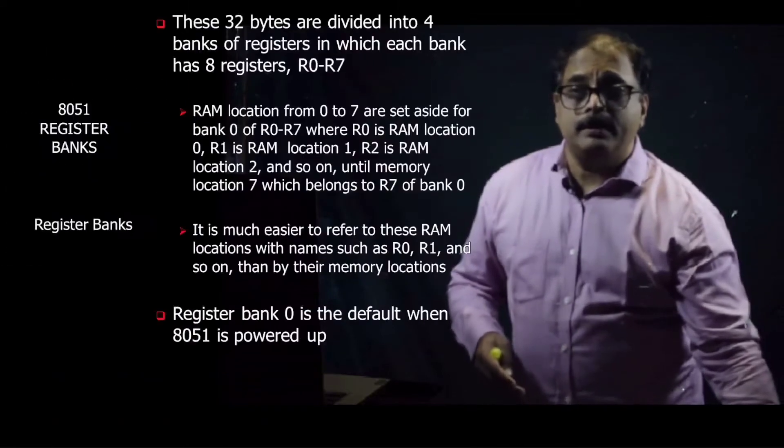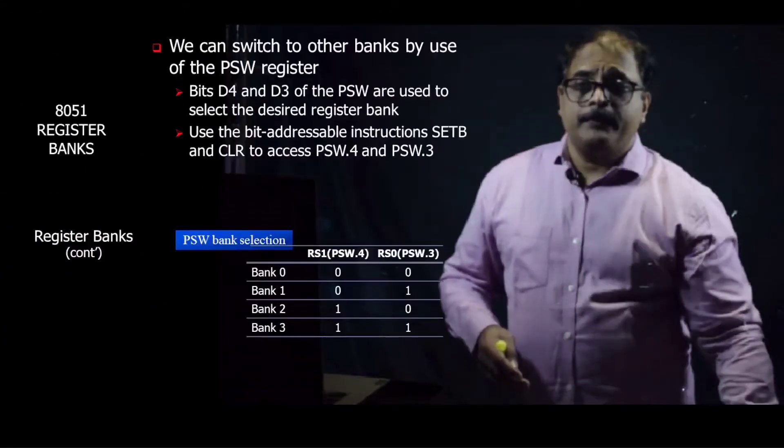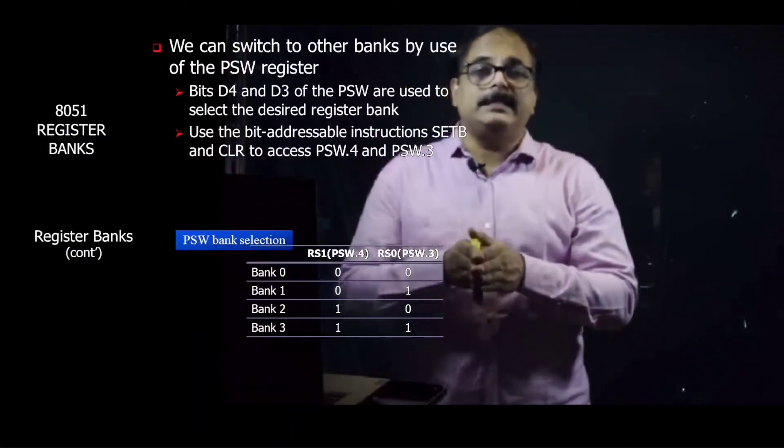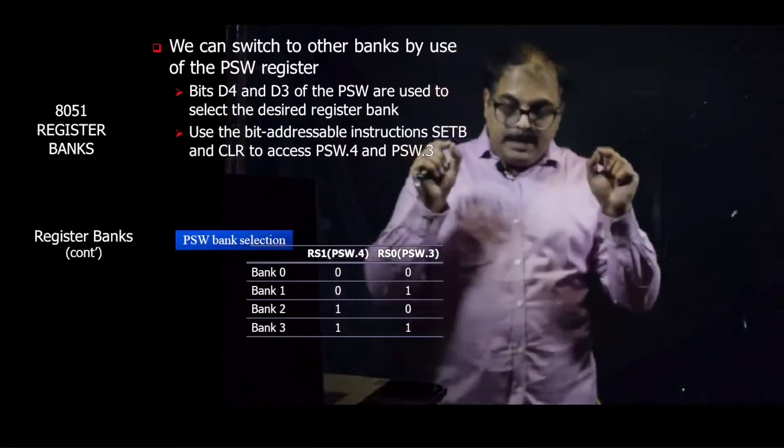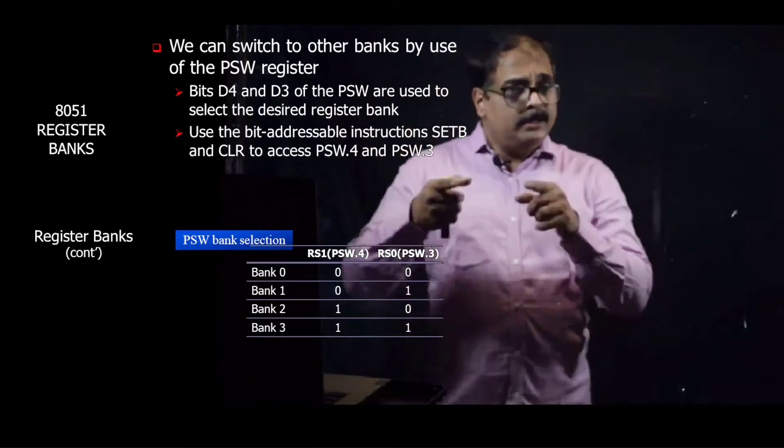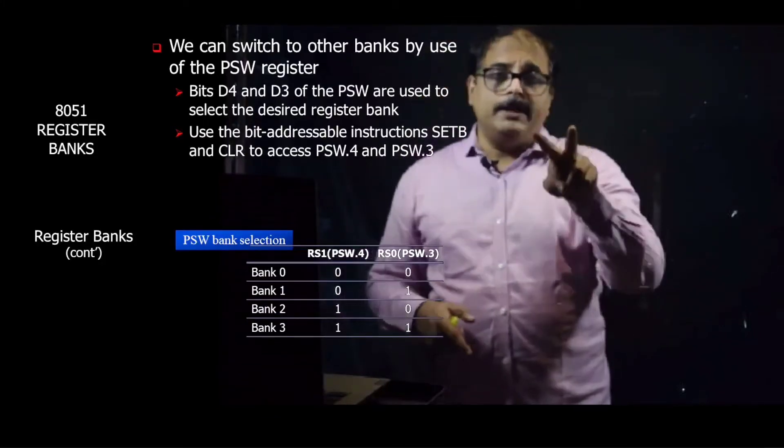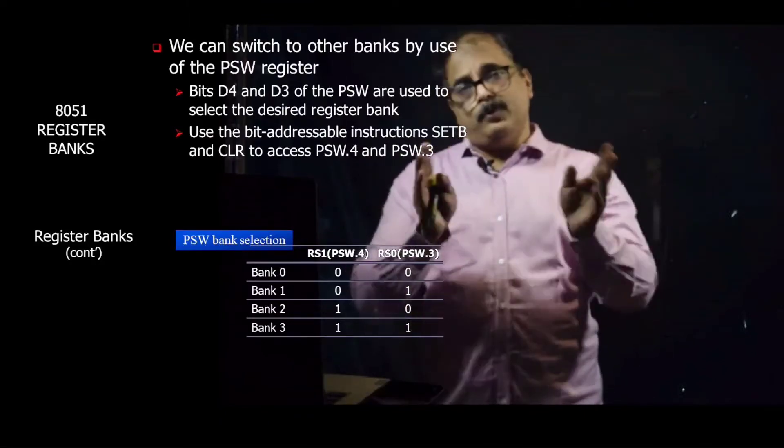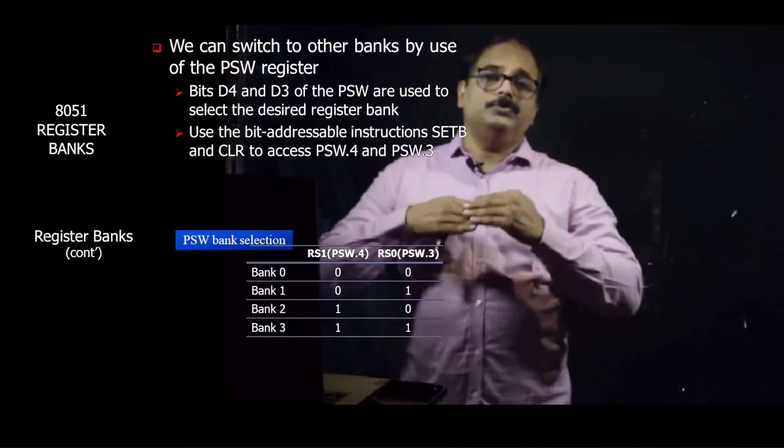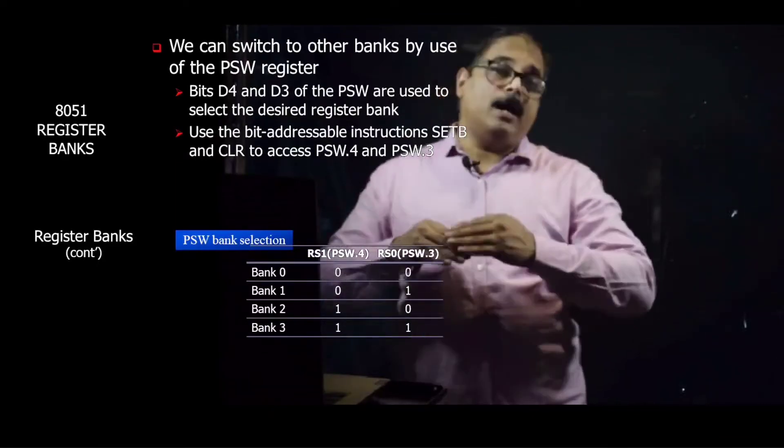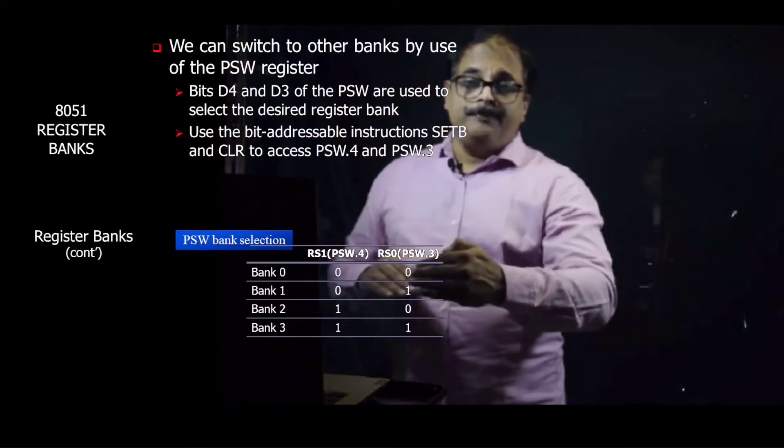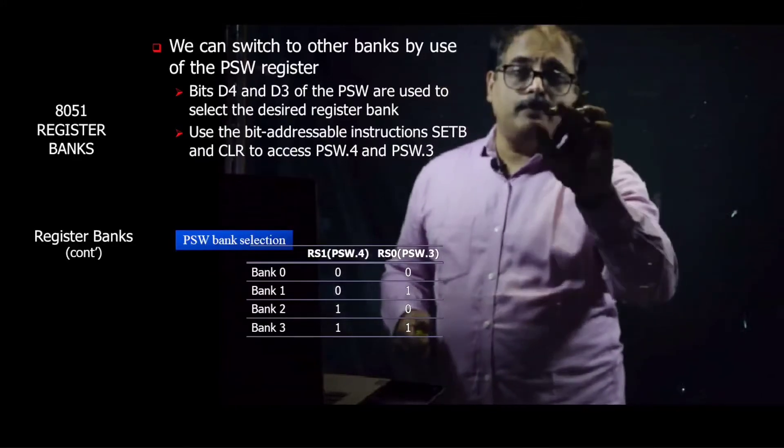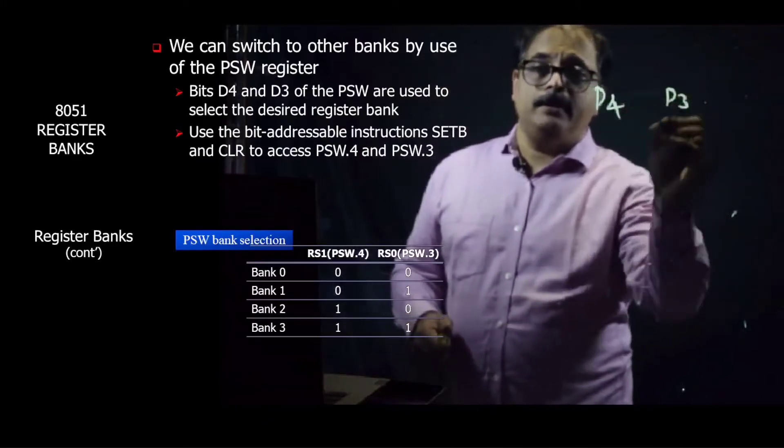You can change the bank by programming bits of PSW, that is Program Status Word register. This PSW register was there in 8085 also. Now here also you have PSW register. There are two bits, D3 and D4, which you program, and if you program it appropriately then you will be able to select a bank other than R0. As you can see on the slide, register bank 0, these two bits are 00, that means PSW 0.4 D4 bit and D3 bit.